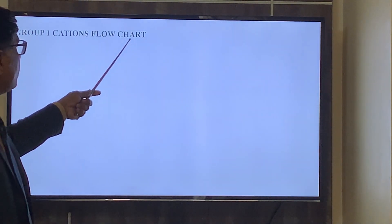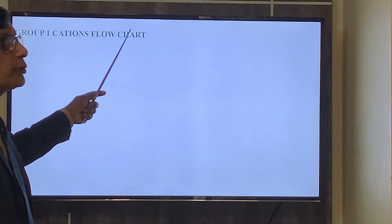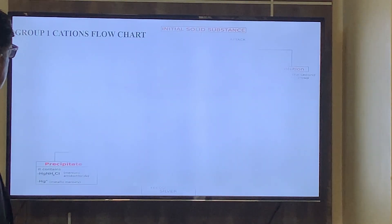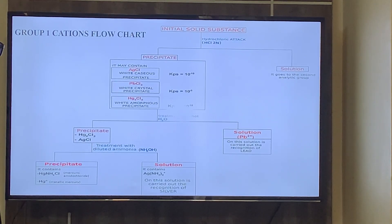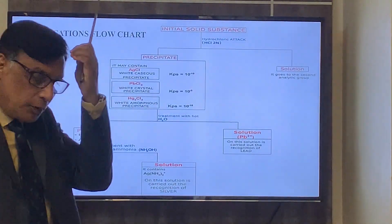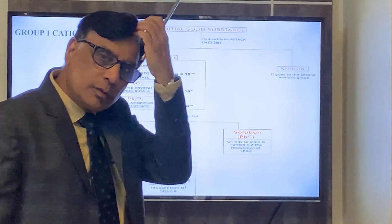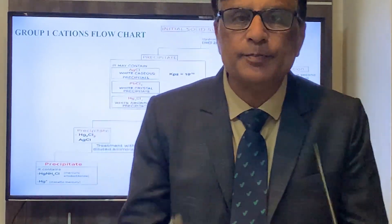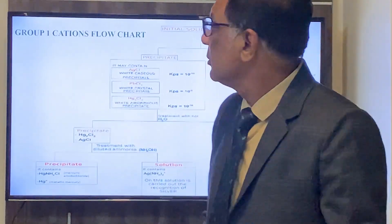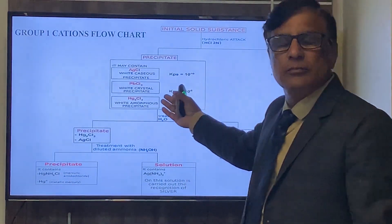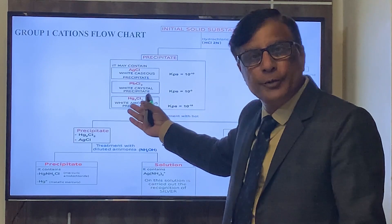Group 1 cations follow a flowchart. Now, I would like to explain this flowchart for you.